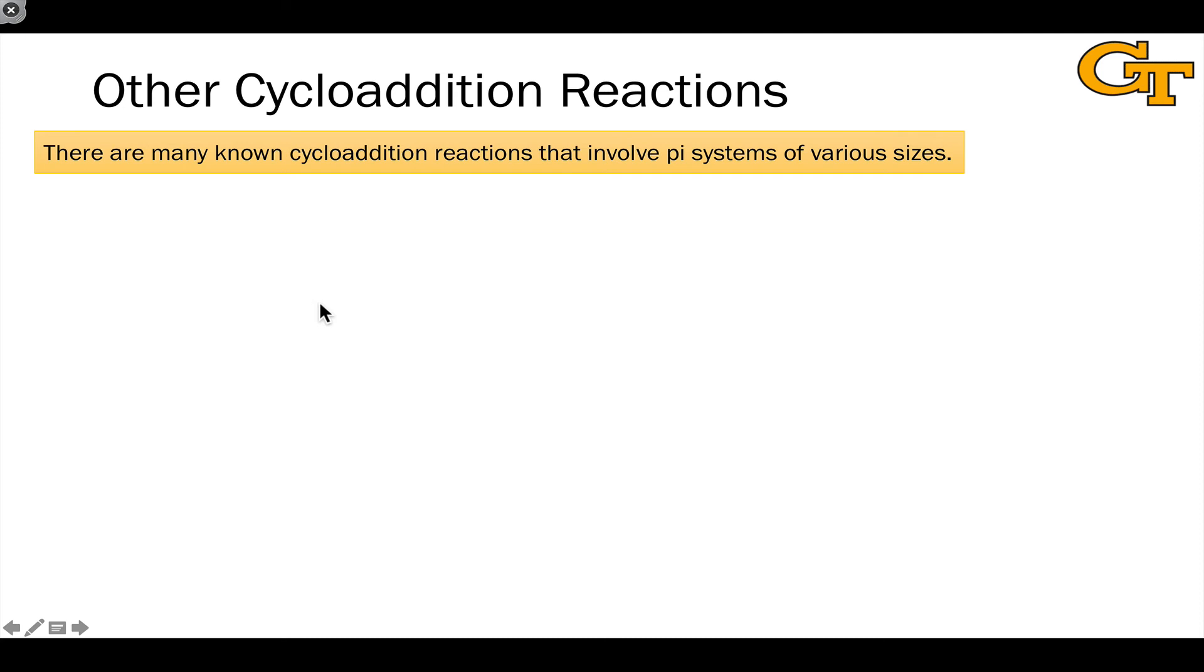There are other cycloaddition reactions than 4+2 that involve pi systems of various sizes and I just want to show a few of these examples on this slide of these reactions. So here's one that involves the combination of a three-atom pi system with a two-atom pi system or a 3+2 nitrone alkene cycloaddition.